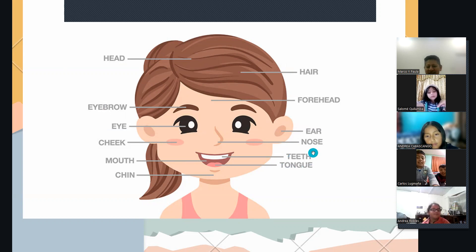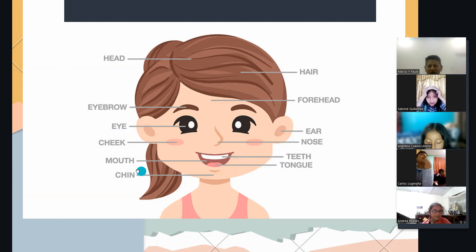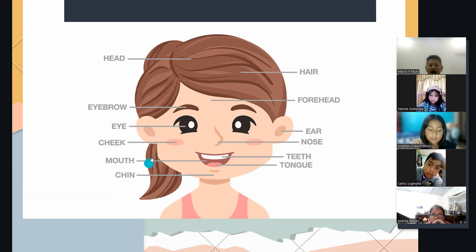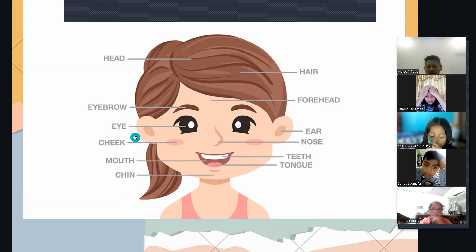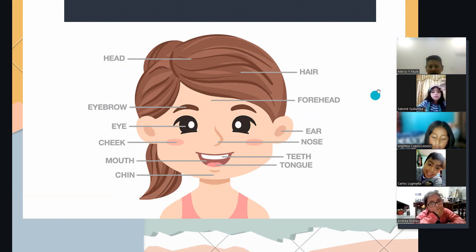¿Cómo se dice dientes? Teeth. Muy bien. ¿Cómo se dice mentón? Chin. Andreita, ¿cómo se dice boca? Mouth. ¿Cachetes? Chick. Muy bien. Ojos — eye. Cuando son dos, eyes. Cuando es uno, eye. Muy bien.